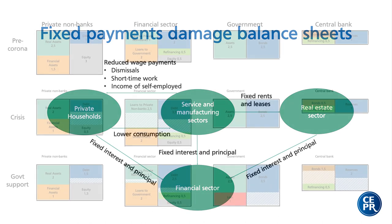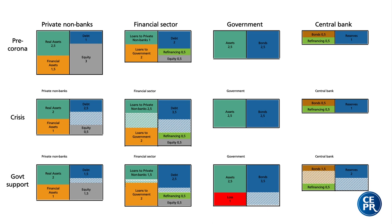To show this, I have a very simple macroeconomic balance sheet analysis with four sectors: private non-banks, financial sector, government, and the central bank. In the pre-crisis situation, when the crisis hits, it affects private non-banks and the financial sector. For private non-banks, the crisis means the balance sheet contracts while debt increases. This additional debt is financed in the first instance by the financial sector, and as a consequence, the debt of the financial sector also goes up. If the government remains passive, we see deterioration of balance sheets by both private non-banks and the financial sector — higher leverage — and this deterioration can lead to insolvencies.